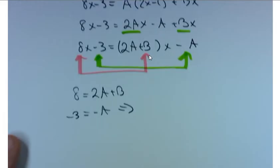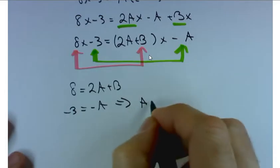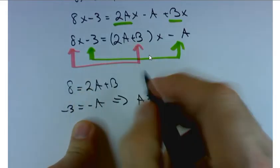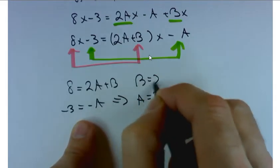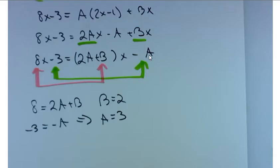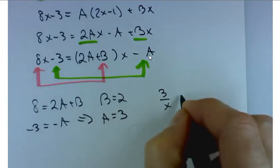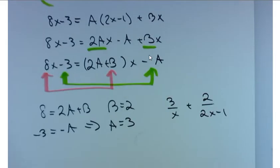And again, we kind of get lucky down here that we really already have this solved for. This is a 2 by 2 system of equations. But very quickly we get A equals 3. If A equals 3, plug that back into here. 2 times 3 is 6. Subtract that from 8. We'll end up with B equals 2. So... Nice. Overall, your final answer is going to be 3 over x plus 2 over 2x minus 1.